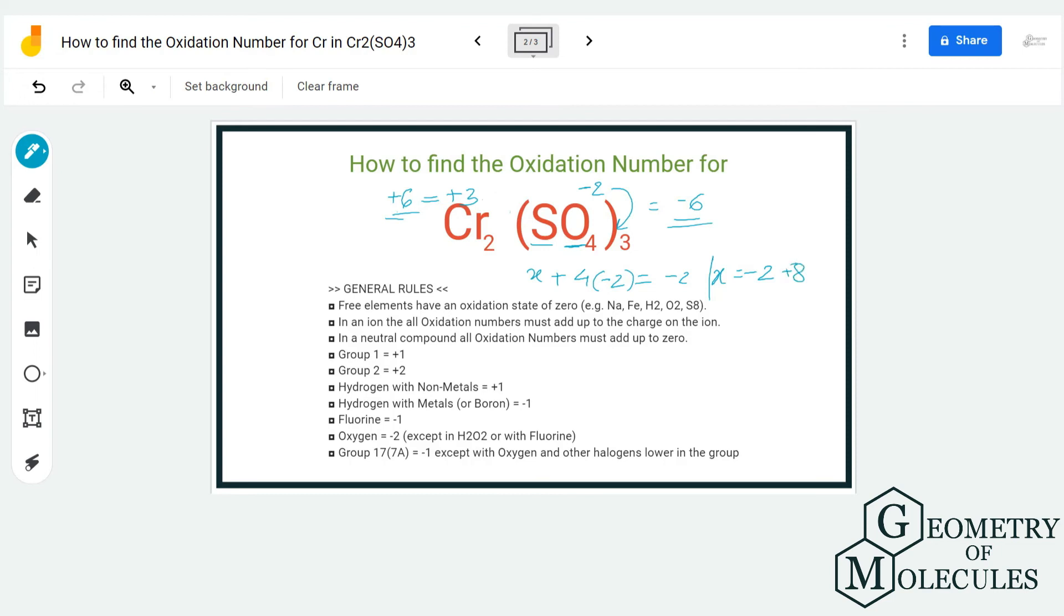Which means X minus 8 equals minus 2. And we are going to take the numbers over there, so X equals 6. So the total charges on the sulfur, or the oxidation number of sulfur, is 6 for this compound.